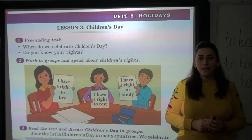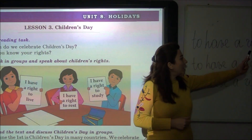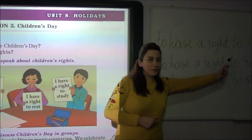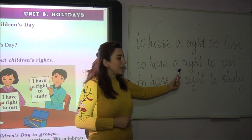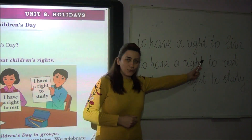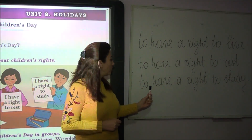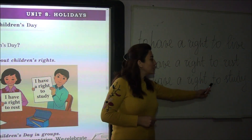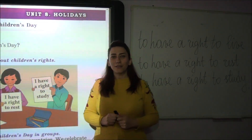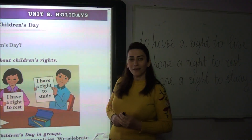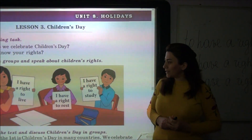listen attentively to some words. For example: to have a right to live — yaşamaq hüququ olmaq; to have a right to rest — dincəlmək hüququ olmaq; to have a right to study — təhsil almaq hüququ olmaq. Now let's learn these in sentence form from the children.